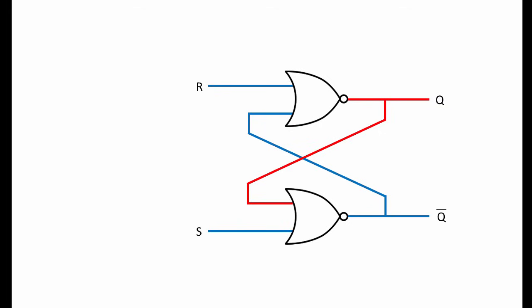To build a gated SR latch, we can make some simple enhancements to an SR latch. By connecting a pair of AND gates in series with the inputs of a NOR-based SR latch, we've created a third input E, which can be used to enable or disable the latching effect.